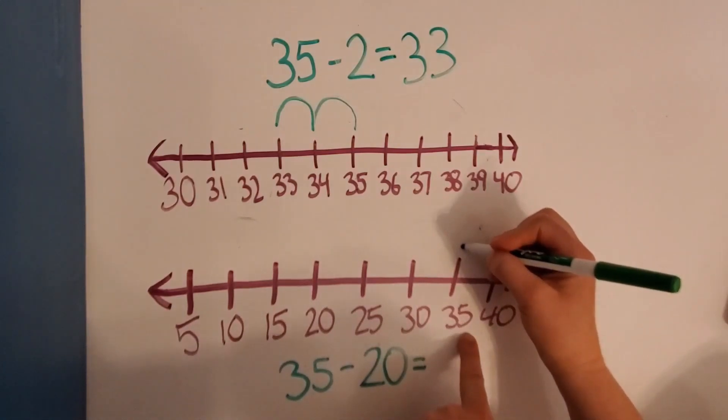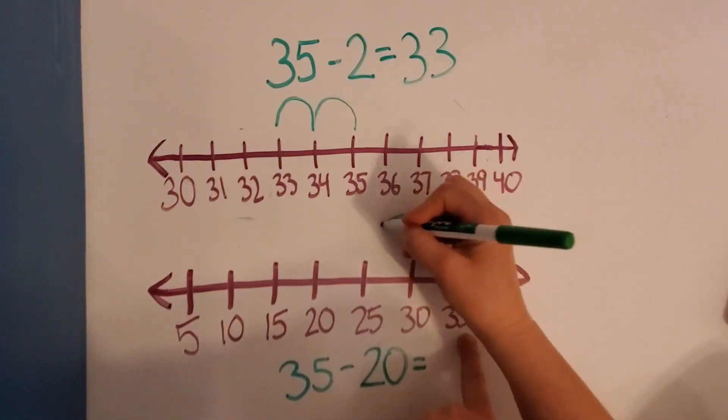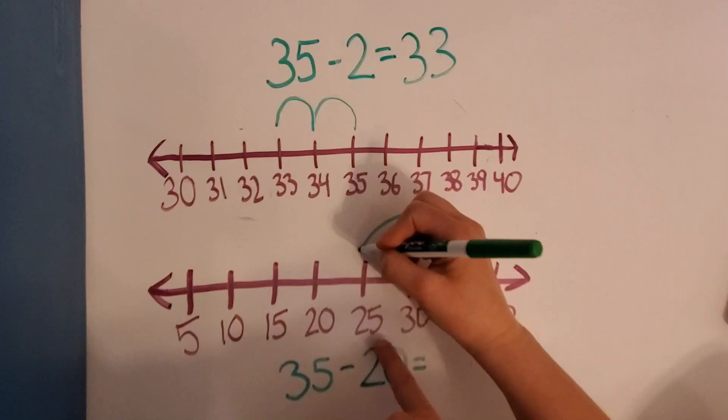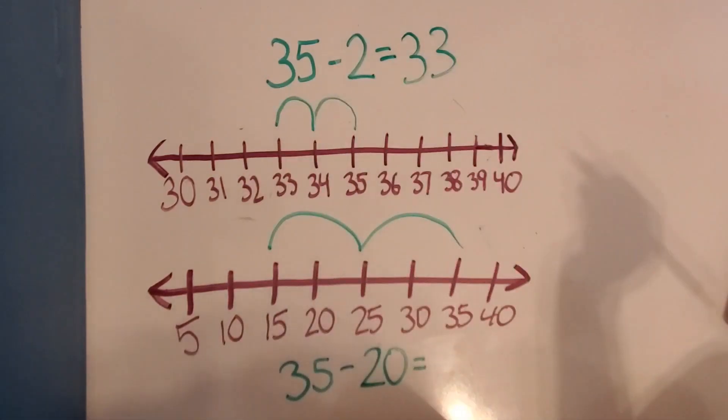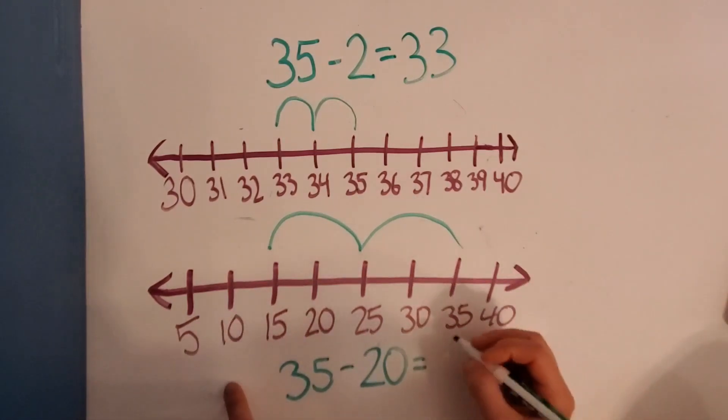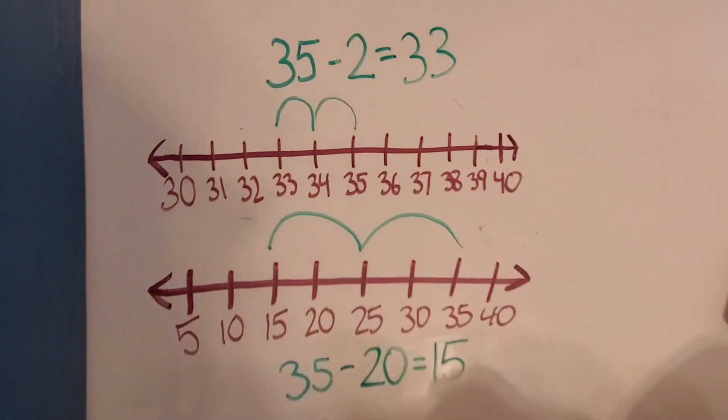So 35 take away 10 is 25. And then 25 take away 10 is 15. All right, so what number do we end on? 15. So 35 minus 20 equals 15.